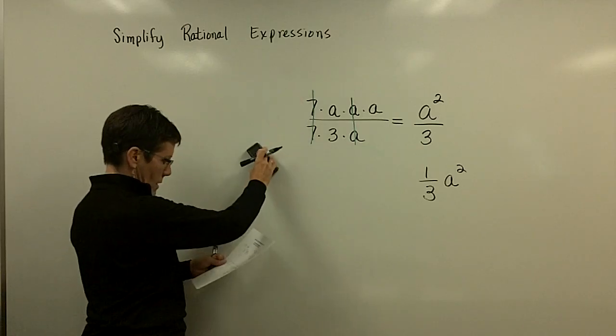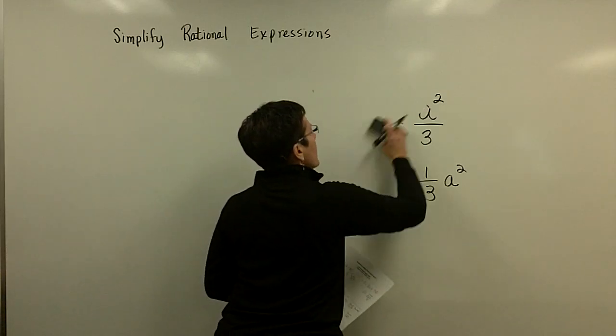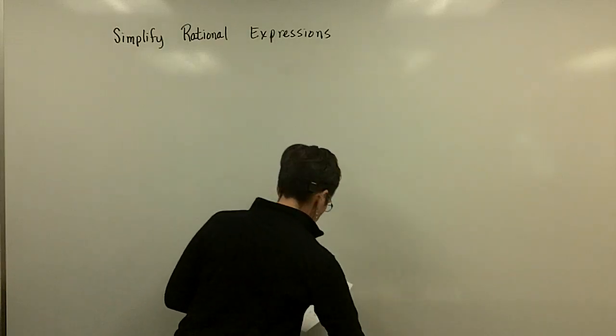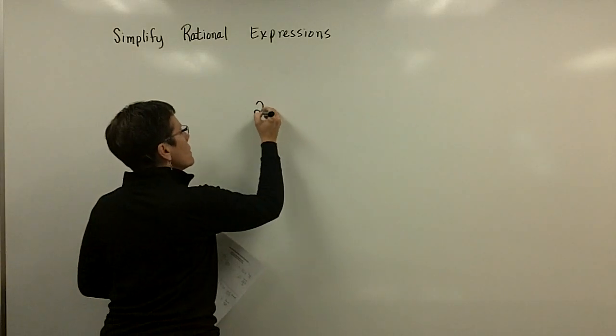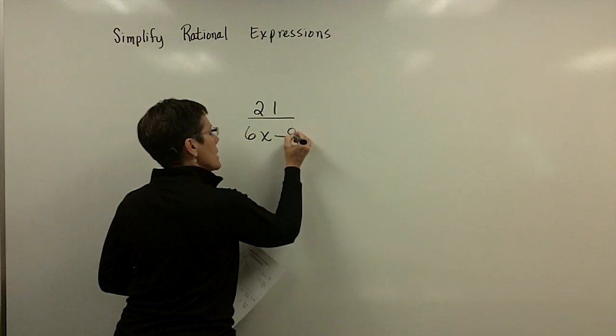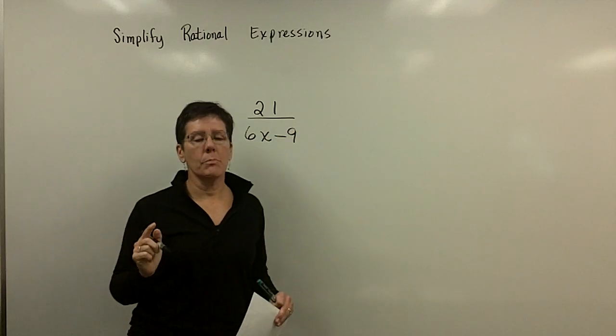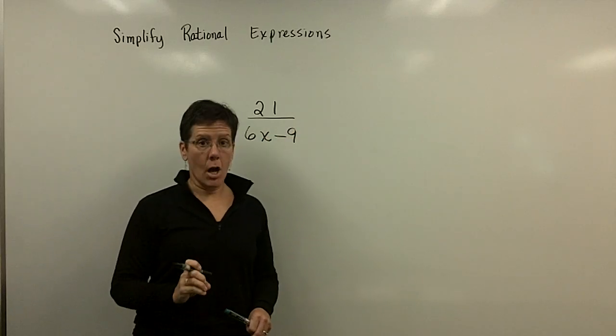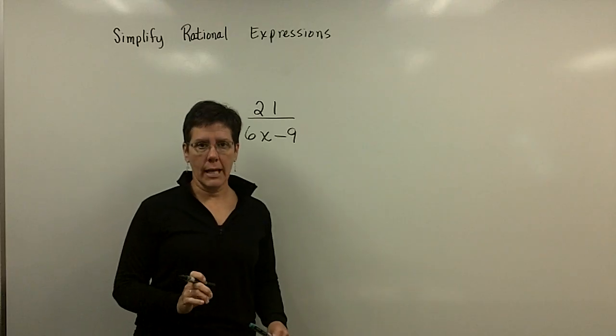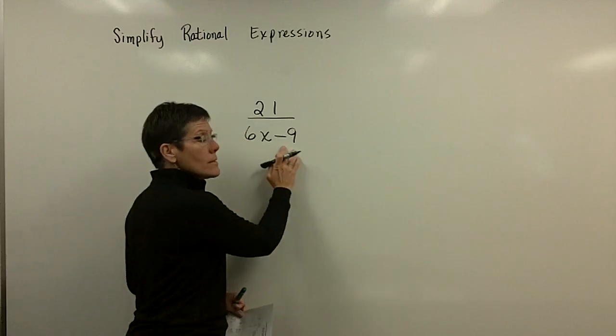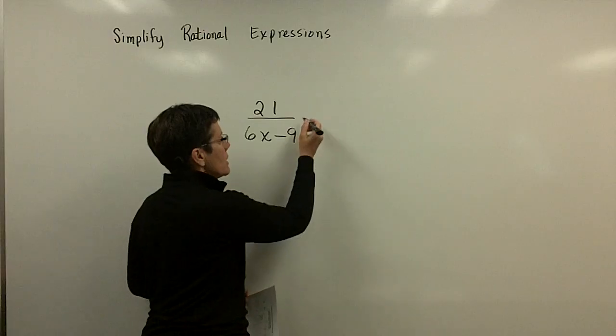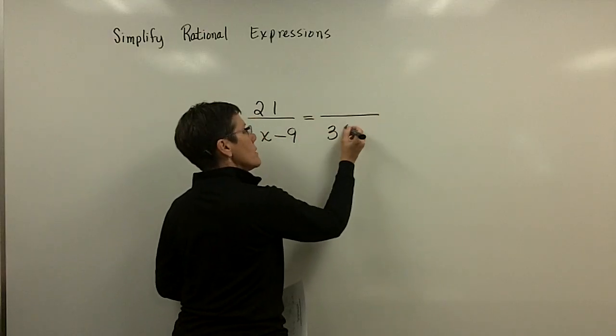Let's do another where I have to factor the denominator. So let's take 21 over 6x minus 9. So your first step in simplifying algebraic fractions is always going to be factor anything that can be. This denominator has a greatest common factor in it. It can have a 3 taken out of it.